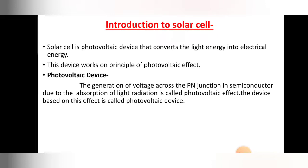So what is the photovoltaic effect? The generation of voltage across the p-n junction in a semiconductor due to the absorption of light radiation is called the photovoltaic effect. The device based on this effect is called a photovoltaic device. That is nothing but the solar cell, converting light energy into electrical energy by the principle of the photovoltaic effect.